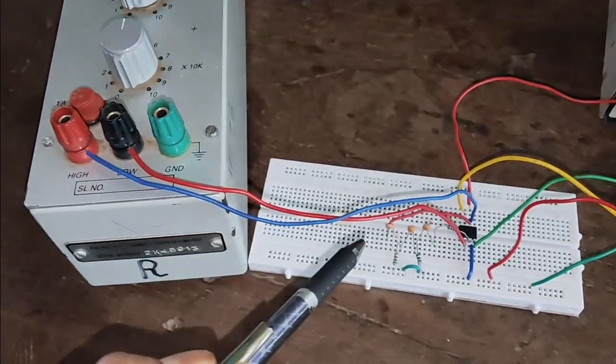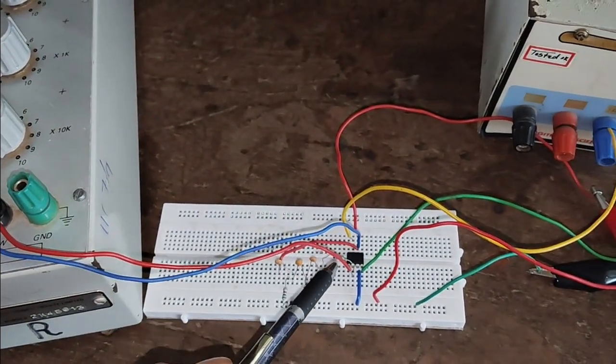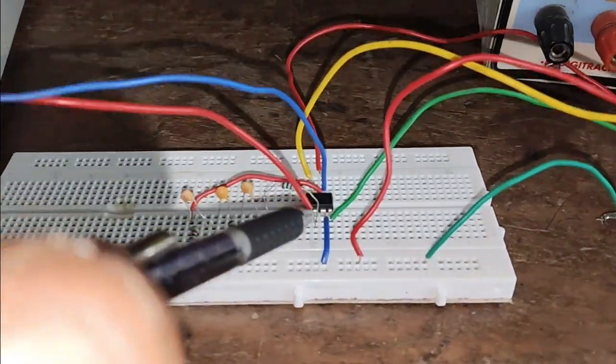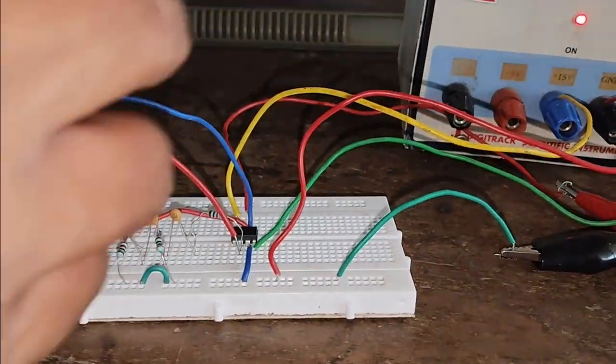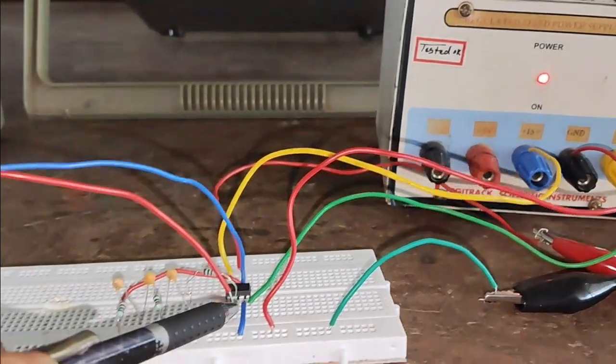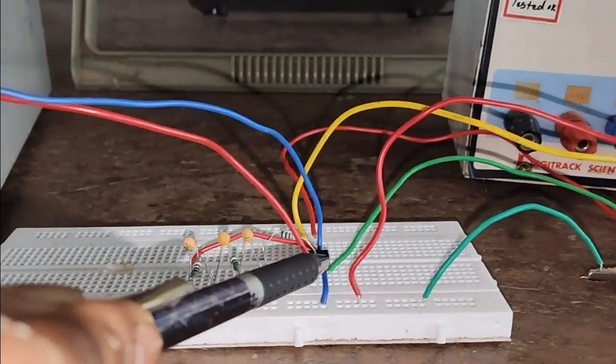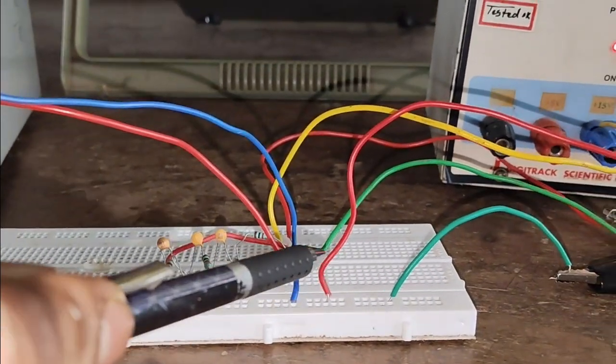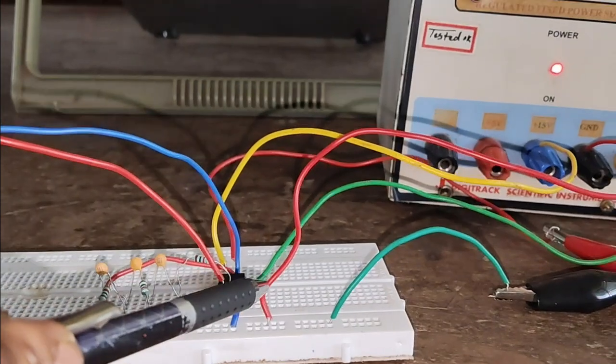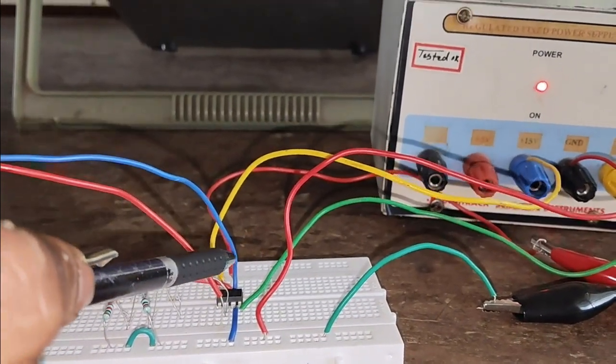I have connected this DRB in the feedback and I am also applying the DC voltage, op-amp DC voltage with the help of DC power supply which is having plus 15 minus 15 and ground. Output is taken at the pin number 6.